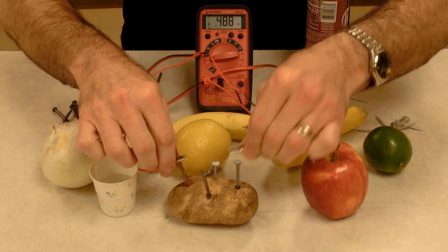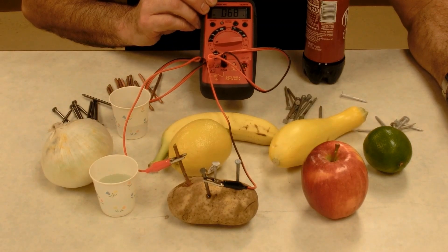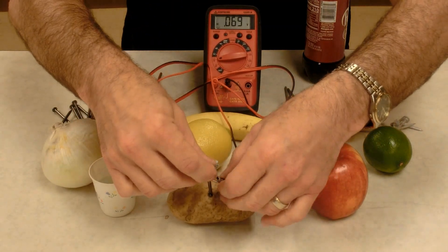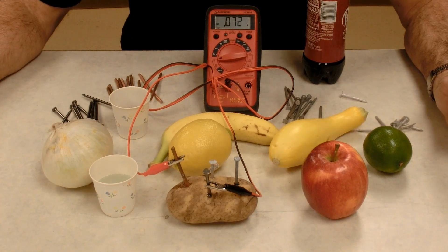Let's try copper and steel. Not much at all, 0.068 volts. Copper and steel, 0.07. Not much voltage there.